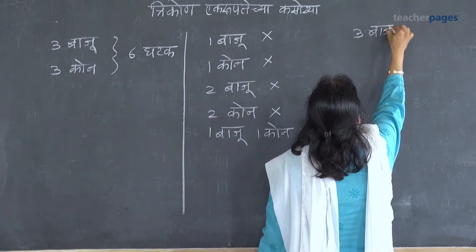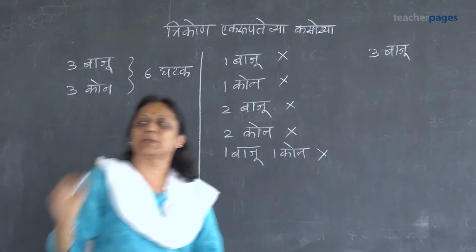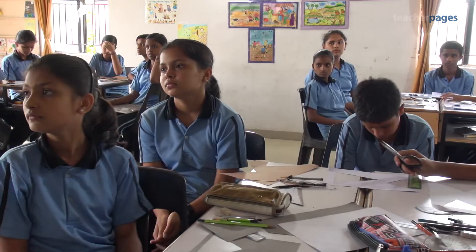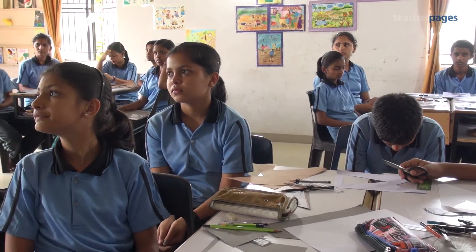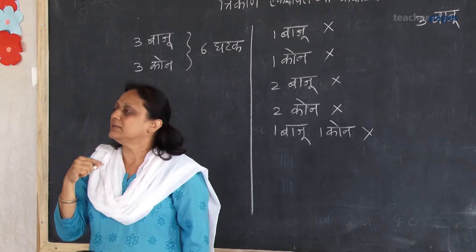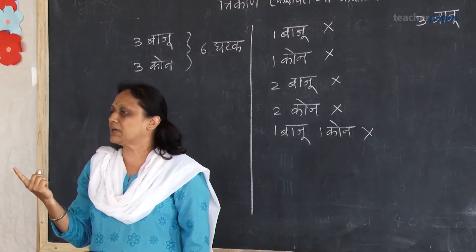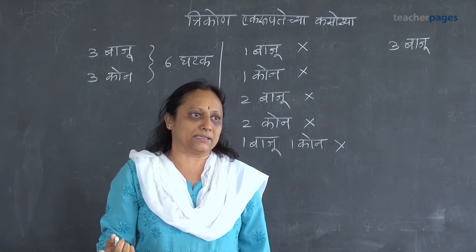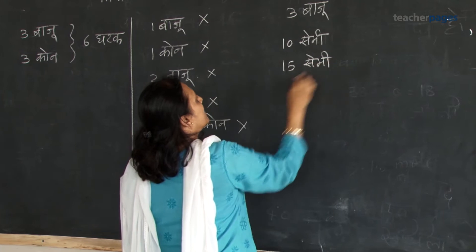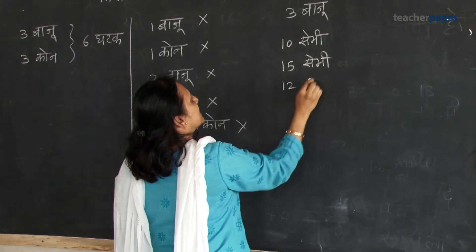So, when you say 3 groups, you will give them the same thing. The same thing with tricons — which will be the same thing. The measurements are: 10 cm, 15 cm, and 12 cm.